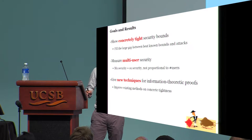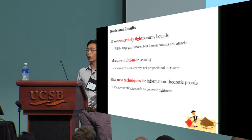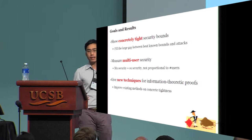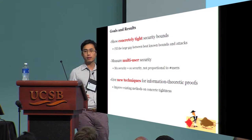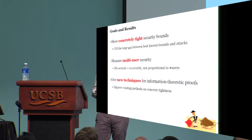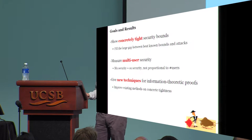Underlying our results are new proof techniques for information theoretic security. They extend and refine existing methods such as the H-coefficient technique of Patarin. The new methods are quite general and might have potential applications beyond the scope of KAC.